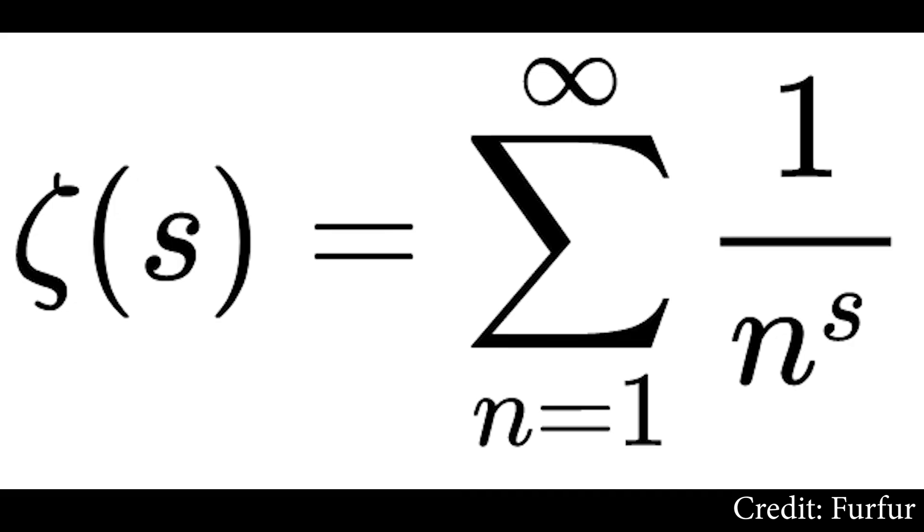Secondly, the more complex math that this proof is based off of, the Riemann zeta function, doesn't allow us to find sums outside of a certain domain, which we go outside of to find this answer.